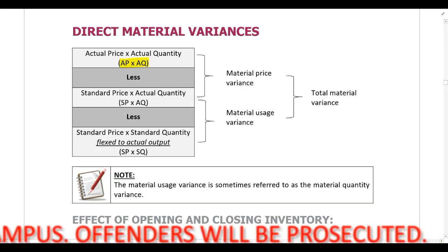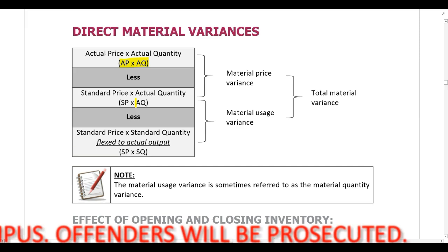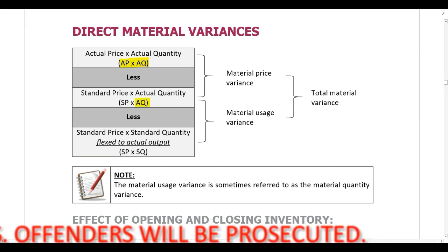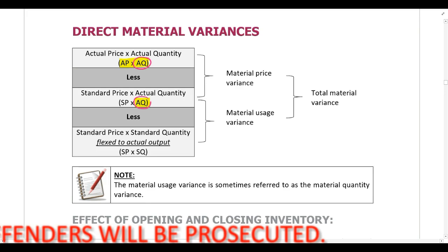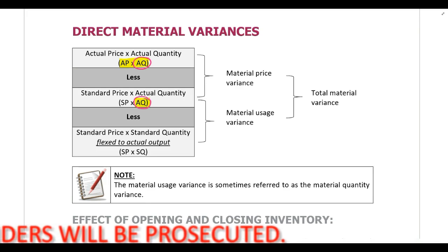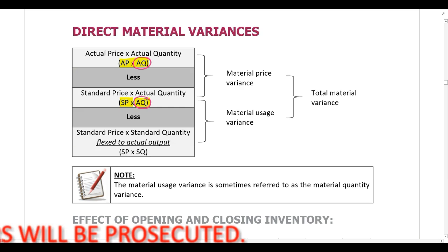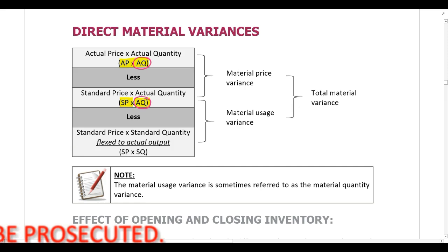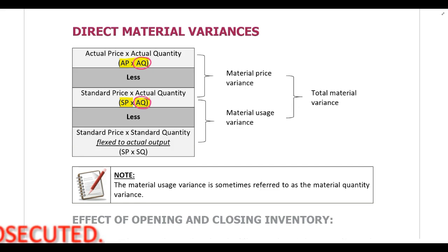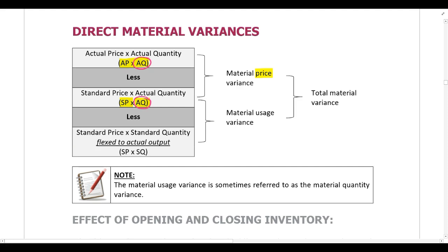First we change the price. The quantity remains the same — it's still the actual quantity — and the only thing I change is the price. So I'm comparing the actual price to the standard price, and if the only thing that I've changed is the price and I'm comparing the actual price to the standard price, that is going to give me a price variance.